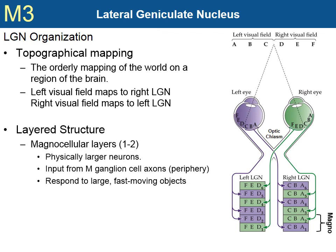Second, the LGN is structured in layers. The first two layers, layers 1 and 2, are also called magnocellular layers, because they contain physically larger neurons — magnus is Latin for large. These large neurons receive input from M ganglion cells, that is, the ganglion cells found in the periphery of vision that have large receptive fields. So the magnocellular layers of the LGN also have large receptive fields, making them respond primarily to large, fast-moving objects.